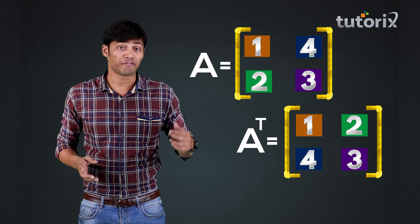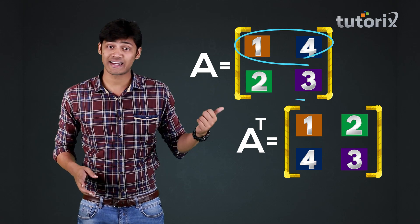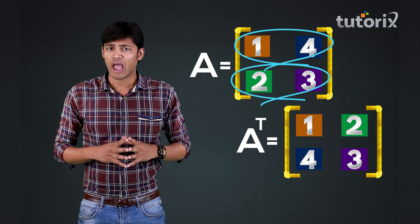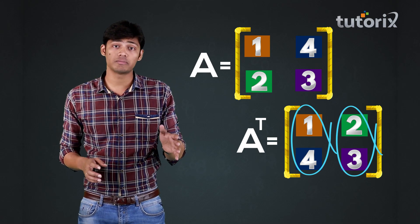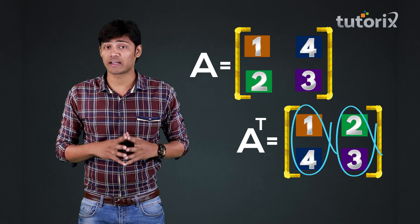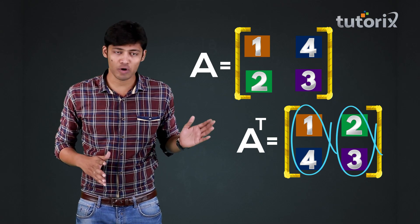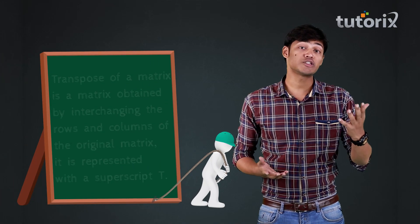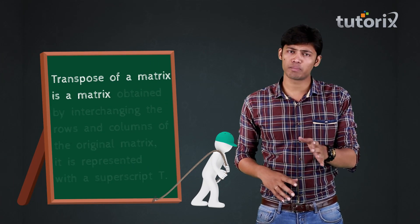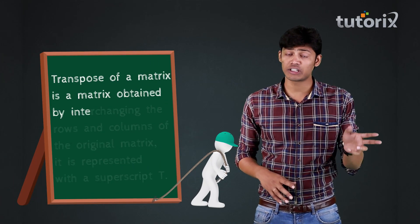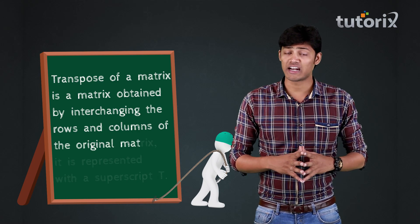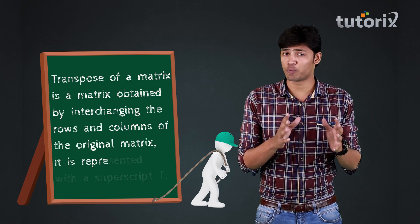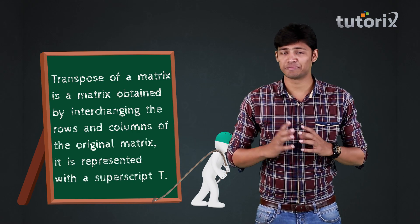That is the first row and the second row in the matrix A have become the first column and the second column in the matrix transpose of A. So transpose of a matrix is obtained by interchanging the rows and the columns of the matrix and is represented with the superscript T.